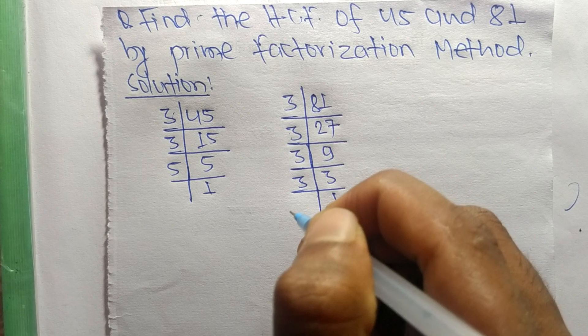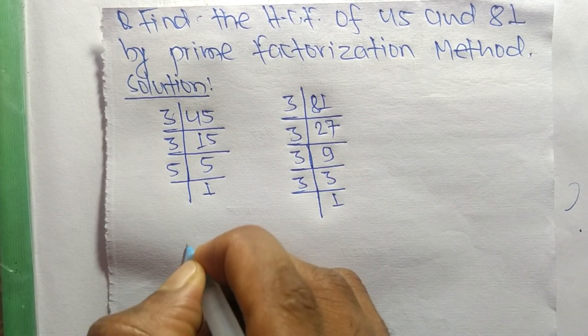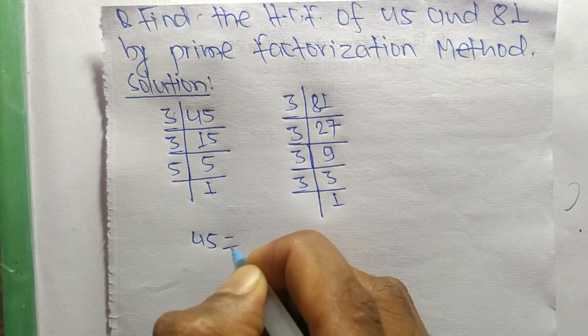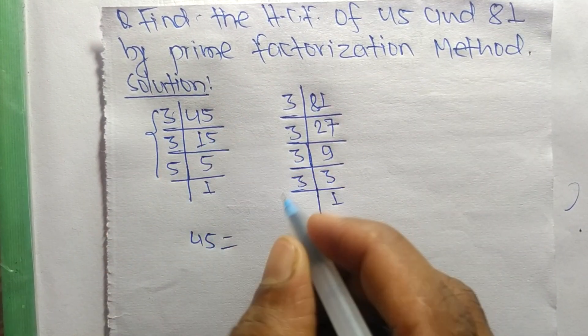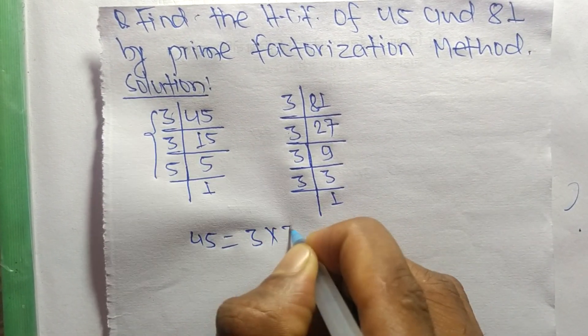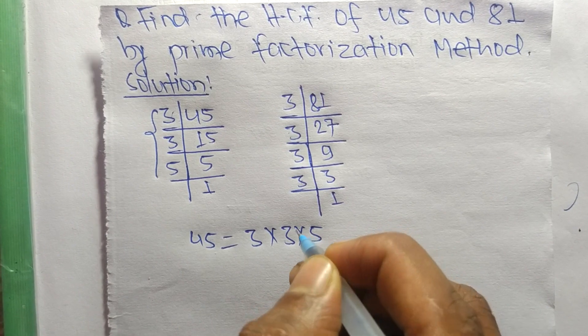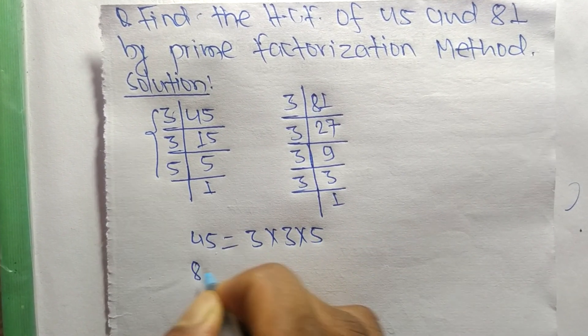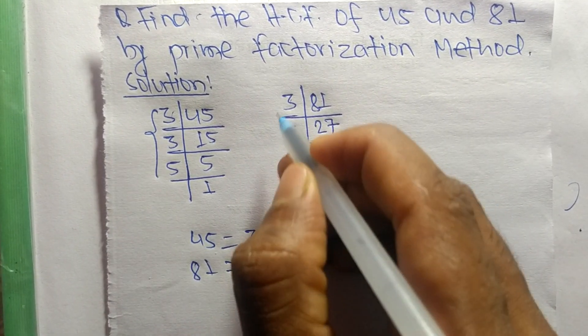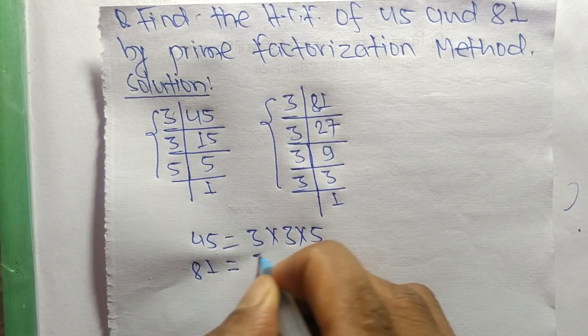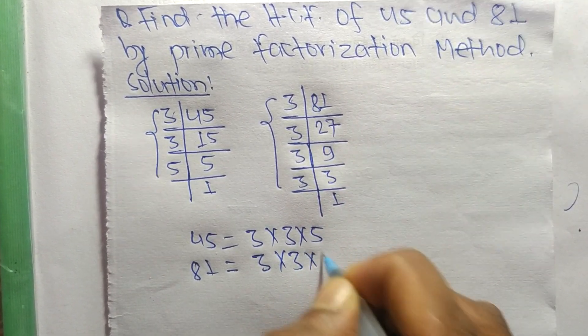Now from these prime factors, we can write 45 equals 3 times 3 times 5. Likewise, 81 equals 3 times 3 times 3 times 3.